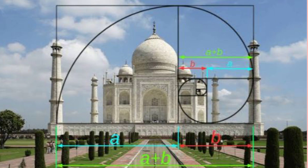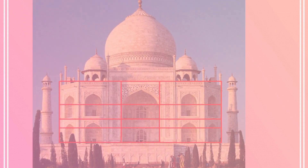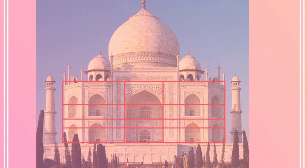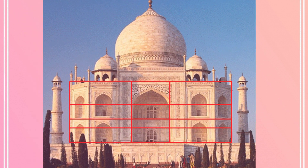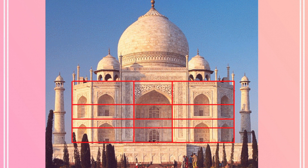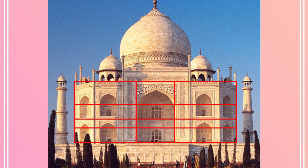The central building is the actual tomb of Mumtaz Mahal, covered in calligraphy, brilliant marble carvings, and inlays of stones such as jade and jasper. The main building of the Taj Mahal was designed using the golden ratio, which is why it looks so perfect.